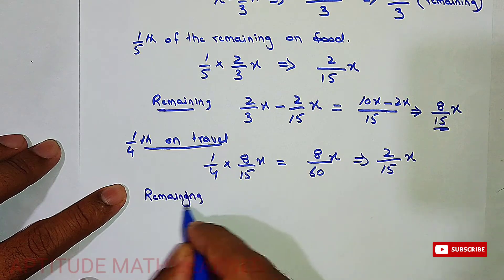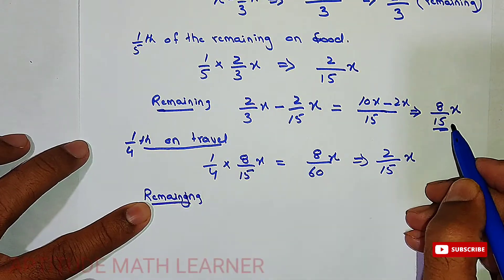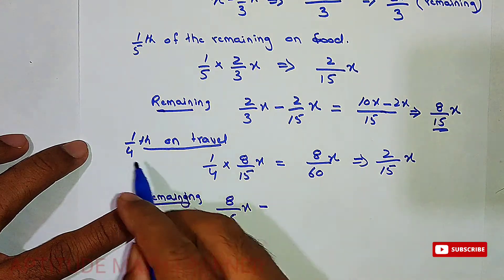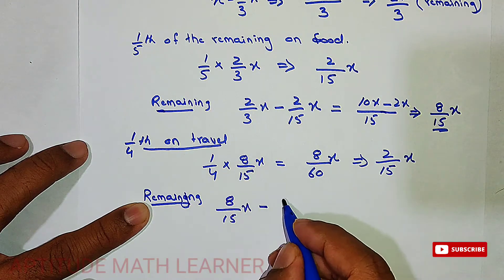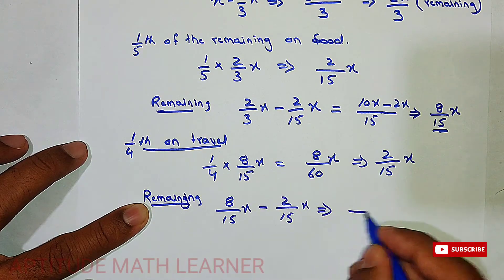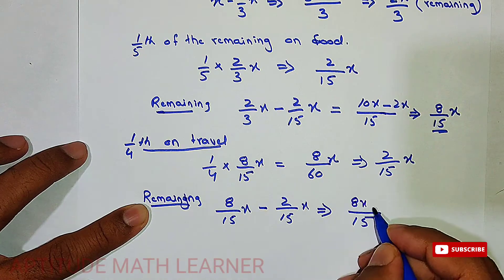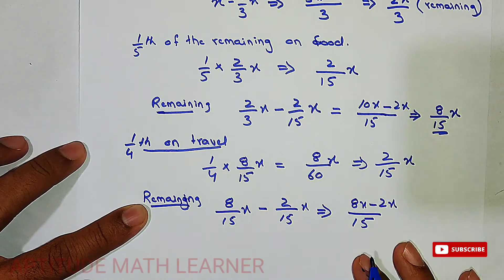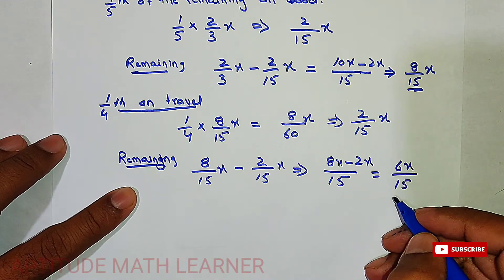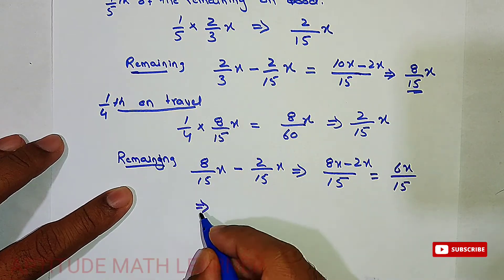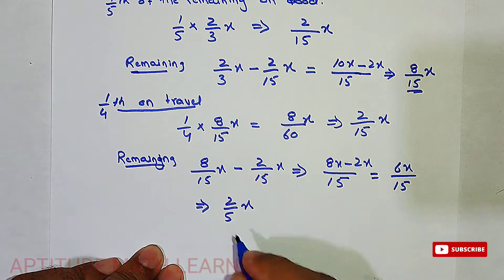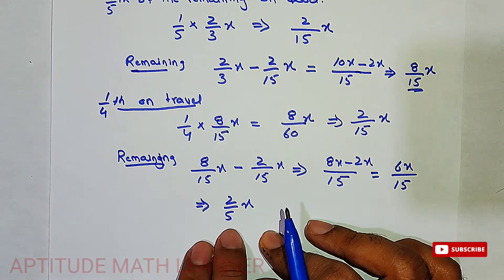The remaining after travel is 8x/15 minus 2x/15, which gives 6x/15. Simplifying, that becomes 2x/5. So the remaining amount after spending on clothes, food, and travel is 2x/5.